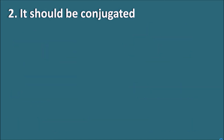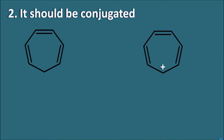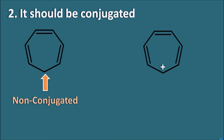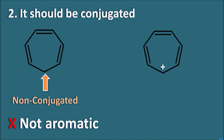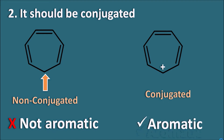Let us take two more examples: cycloheptatriene and cycloheptatrienyl cation. In cycloheptatriene, one carbon is not conjugated, so it is not aromatic. But in the case of the cycloheptatrienyl cation, the structure is conjugated and it is aromatic in nature.